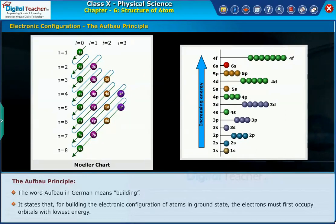It states that for building the electronic configuration of atoms in ground state, the electrons must first occupy orbitals with the lowest energy.